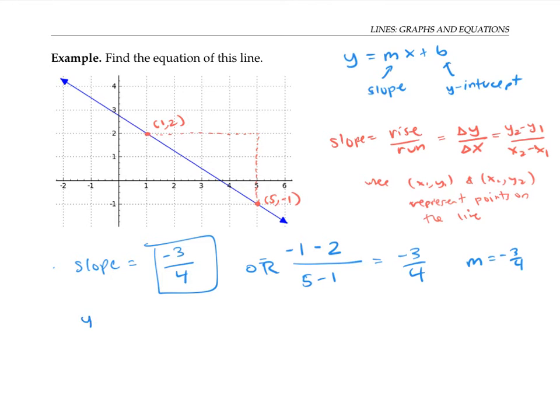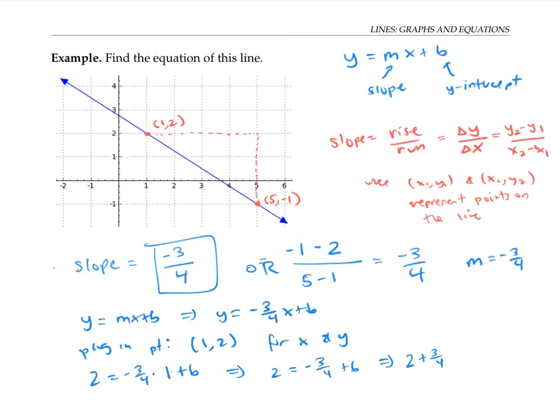And I can start off with my equation y equals mx plus b, that is y equals negative three fourths x plus b. And I can plug in the point 1, 2 for my x and y. So that gives me two equals negative three fourths times one plus b solving for b. That's two equals negative three fourths plus b. So add three fourths to both sides. That's two plus three fourths equals b. So b is eight fourths plus three fourths, which is 11 fourths, which is actually just what I eyeballed it to be.